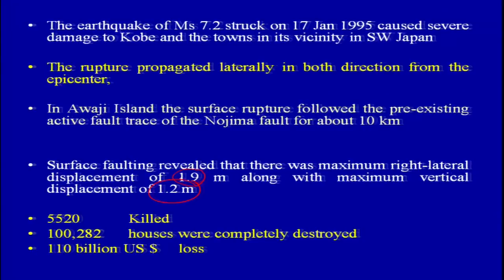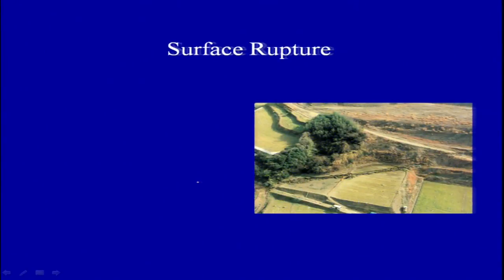After this earthquake, if we consider what has been done in terms of saving people and providing a safer environment to society, Japan has extensively mapped all such faults. A similar thing needs to be done in India because infrastructure development is exponentially growing. The surface rupture observed after the Kobe earthquake can be seen in this aerial photograph — you can see that some portion of the land has been uplifted as well as showing right lateral movement.